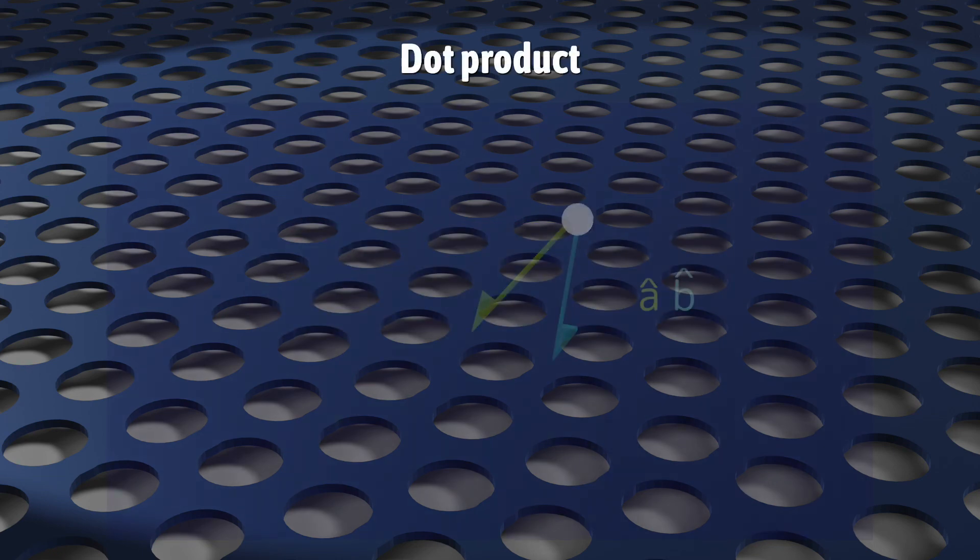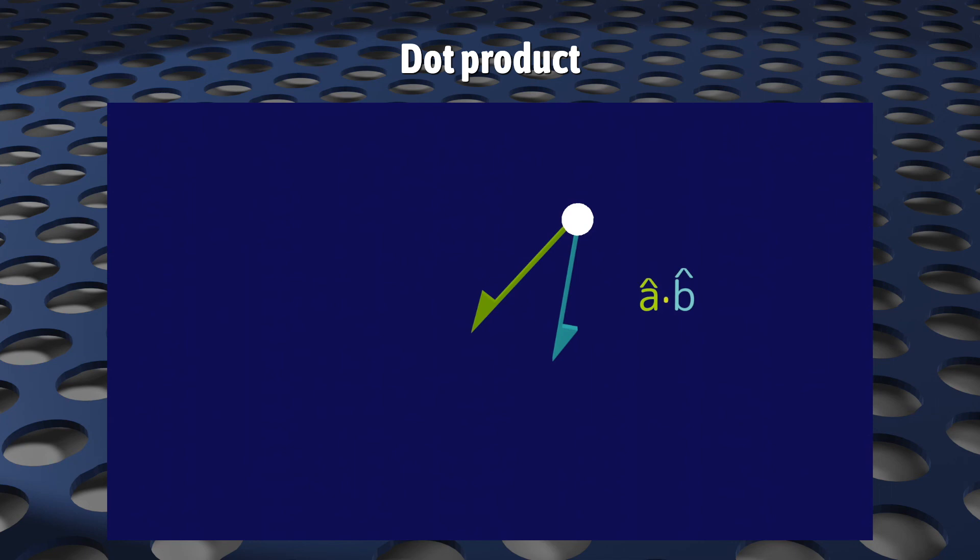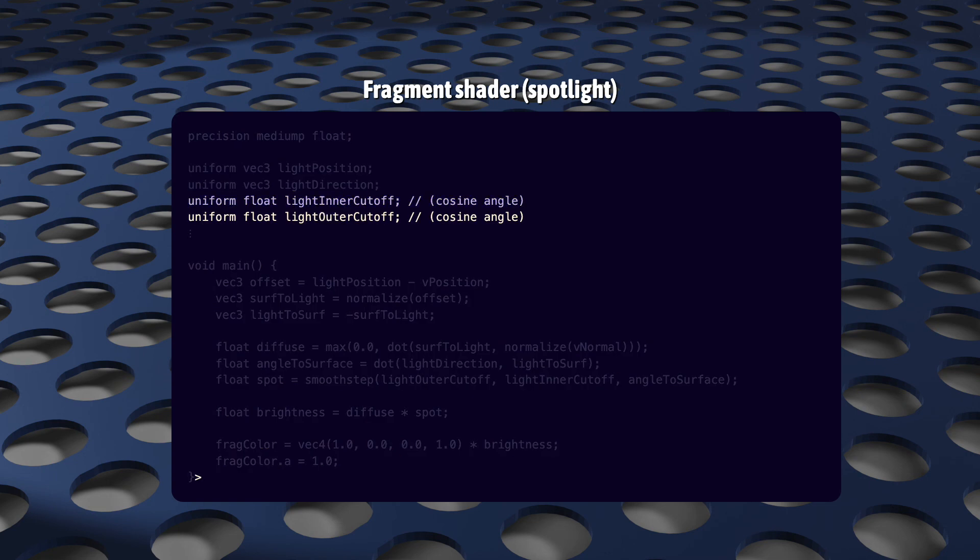Now, do you remember what we get if we calculate the dot product of two unit vectors? It gives us the cosine of the angle between them. That's the whole reason that we use dot products in our diffuse brightness calculations, right? Well, if we got the dot product of our two directions here, that would give us the cosine of the angle between the way the light is pointed and the direction to the fragment. And that gives us a third cosine value. We already had one for the inner cone, and we had one for the outer cone. And now we have the angle to the fragment. And that's everything we need to call smooth step.